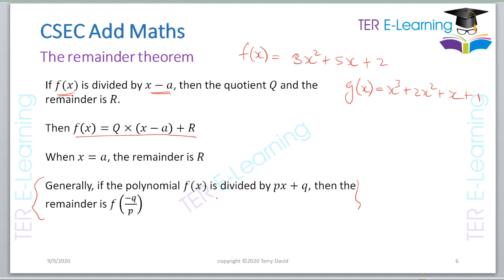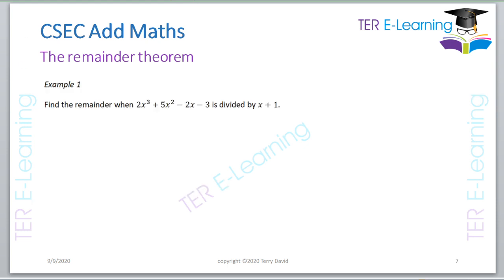What the Remainder Theorem is basically saying — and this is a general thing you need to know — is that if a polynomial f(x) is divided by (px + q), then the remainder is f evaluated at that value. Take for example: find the remainder when 2x³ + 5x² − 2x − 3 is divided by (x + 1).